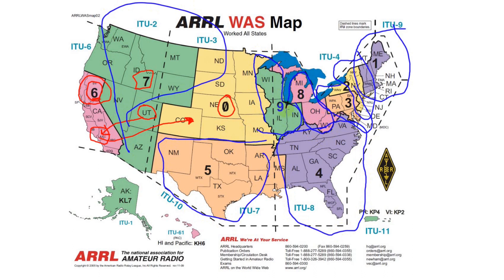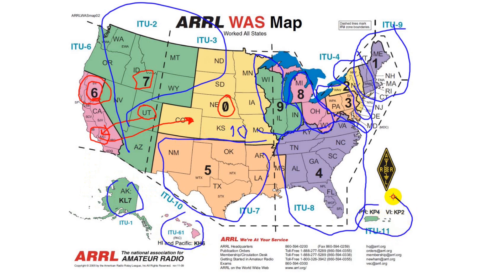I point out that the area assigned a zero is in fact the tenth call area. The FCC also assigns special prefixes and numbers to Alaska, Hawaii, Puerto Rico, and various U.S. holdings around the world.